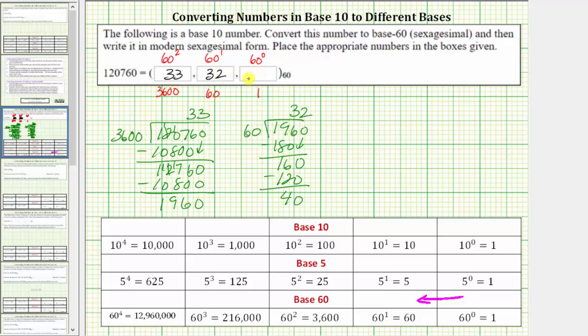And then finally, we have the 60 to the zero or ones place value, and we know there are 40 ones in 40, and therefore the whole number in the ones place value is 40. The number in base 60 is 33, 32, 40.